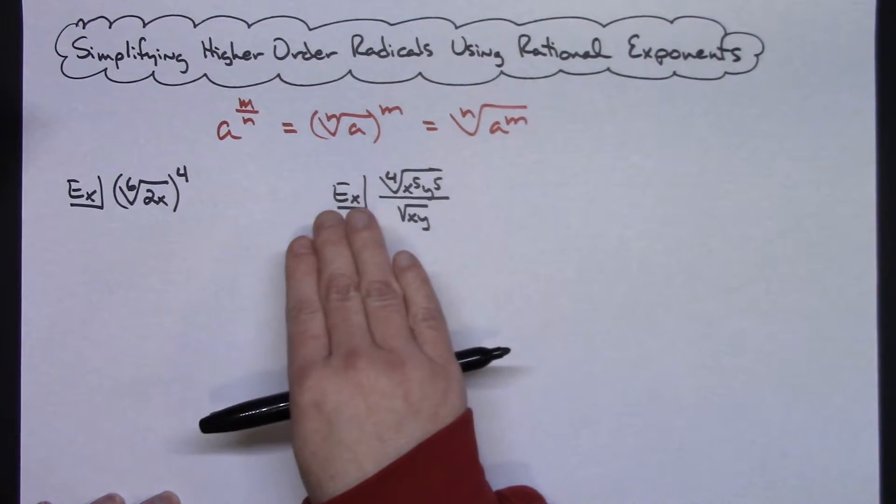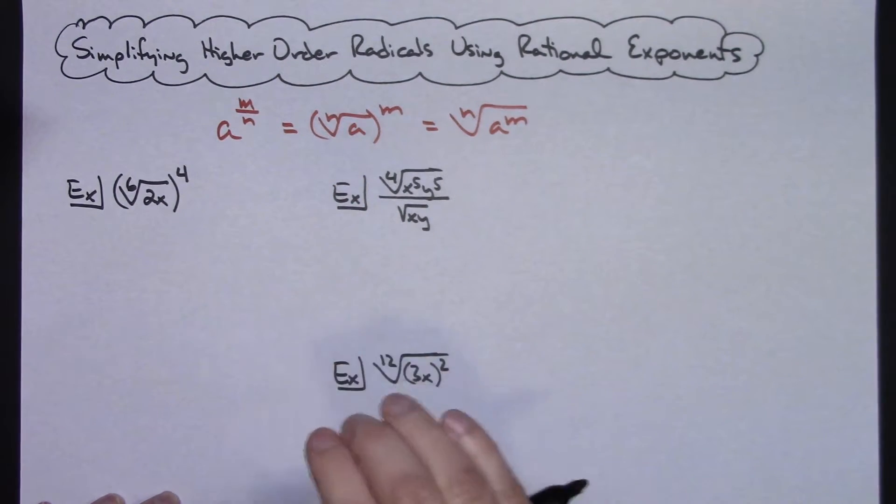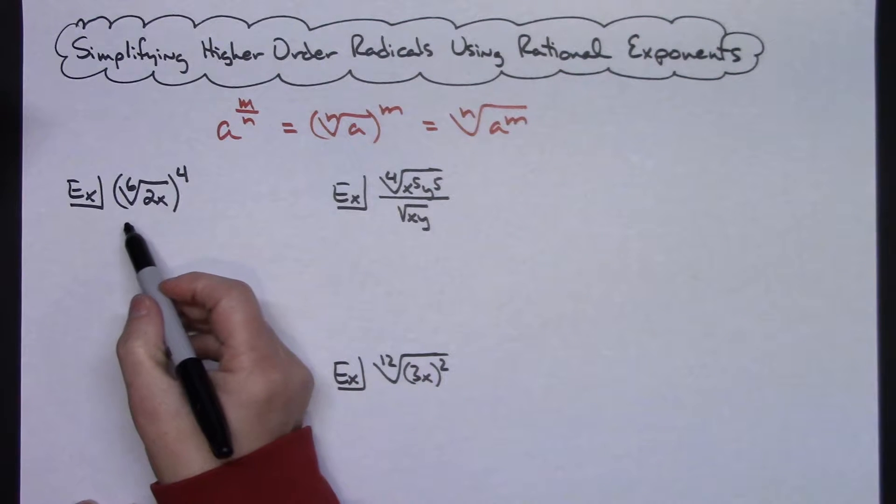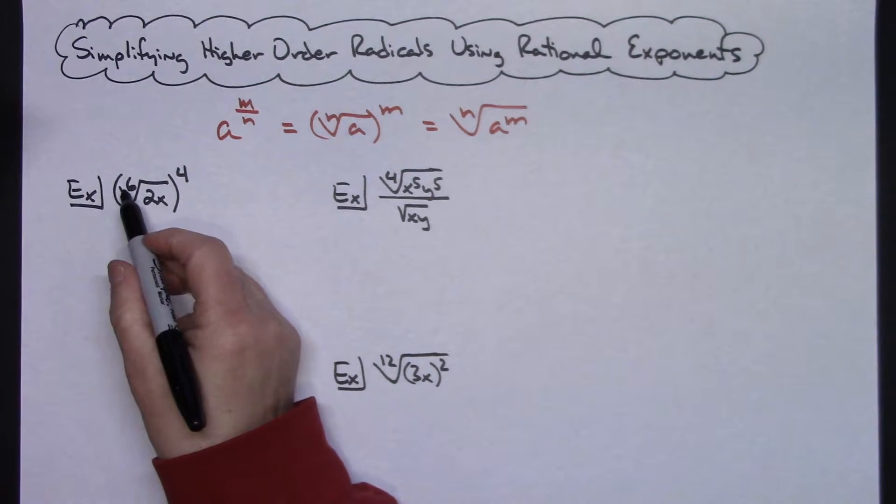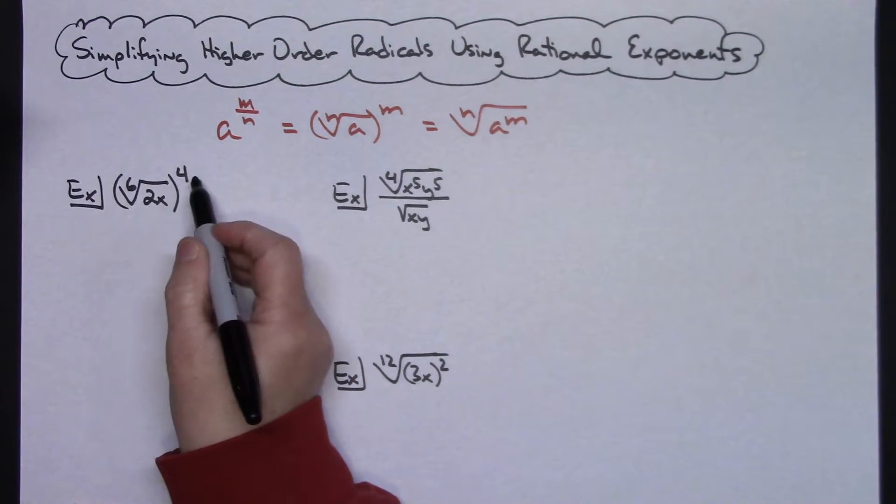Simplify, work with those rational exponents, and then turn it back into a radical for my final answer. So for this first example right here, I've got the sixth root of 2x all raised to the fourth power.